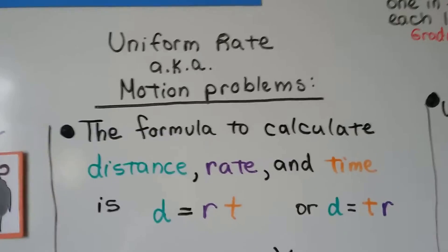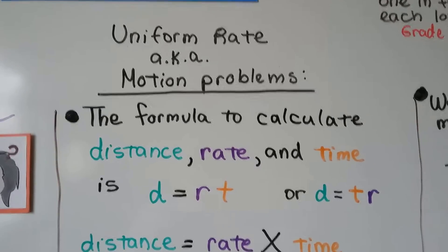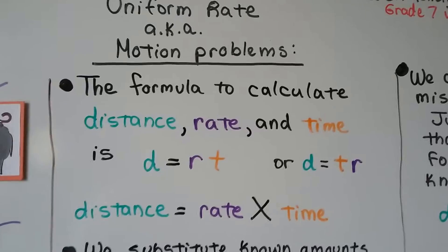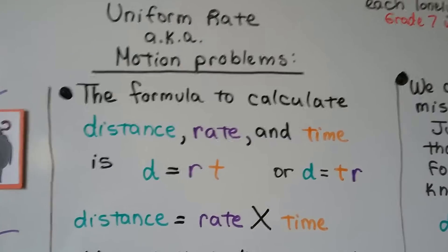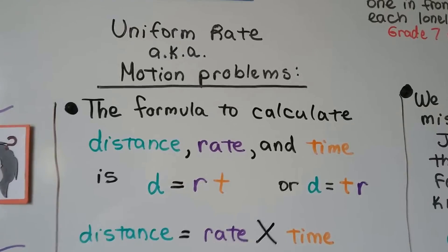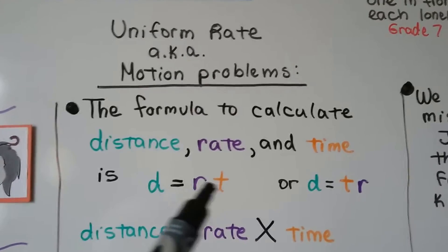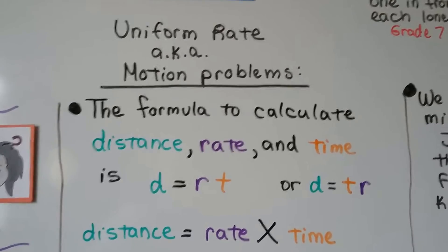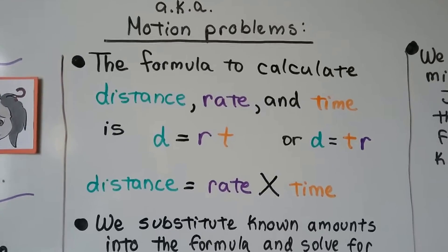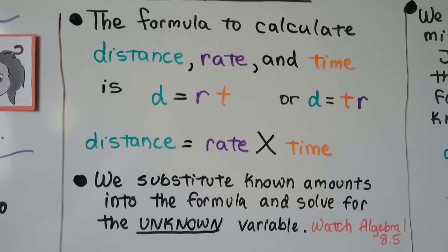So for uniform rate, which is also known as motion problems, the formula to calculate distance, rate, and time is D equals RT. We can also say D equals TR. Because we're multiplying these two together, it doesn't matter which order we put them in. 2 times 3 is the same thing as 3 times 2, isn't it? So it's distance equals the rate times the time.